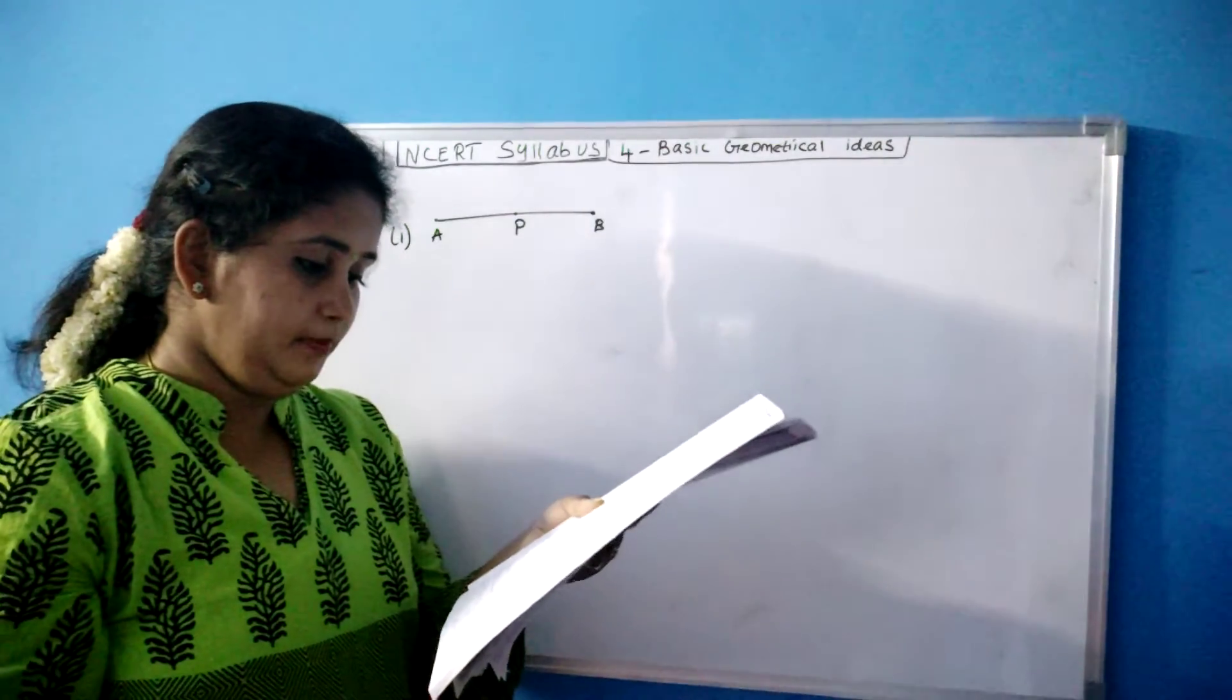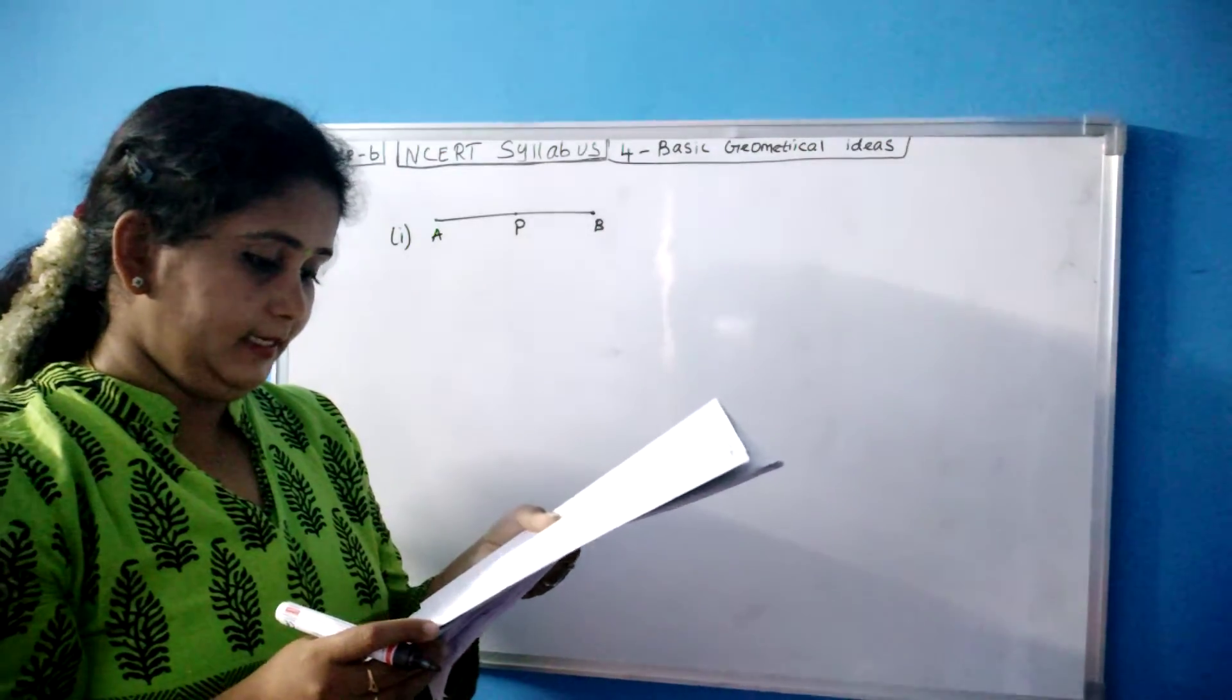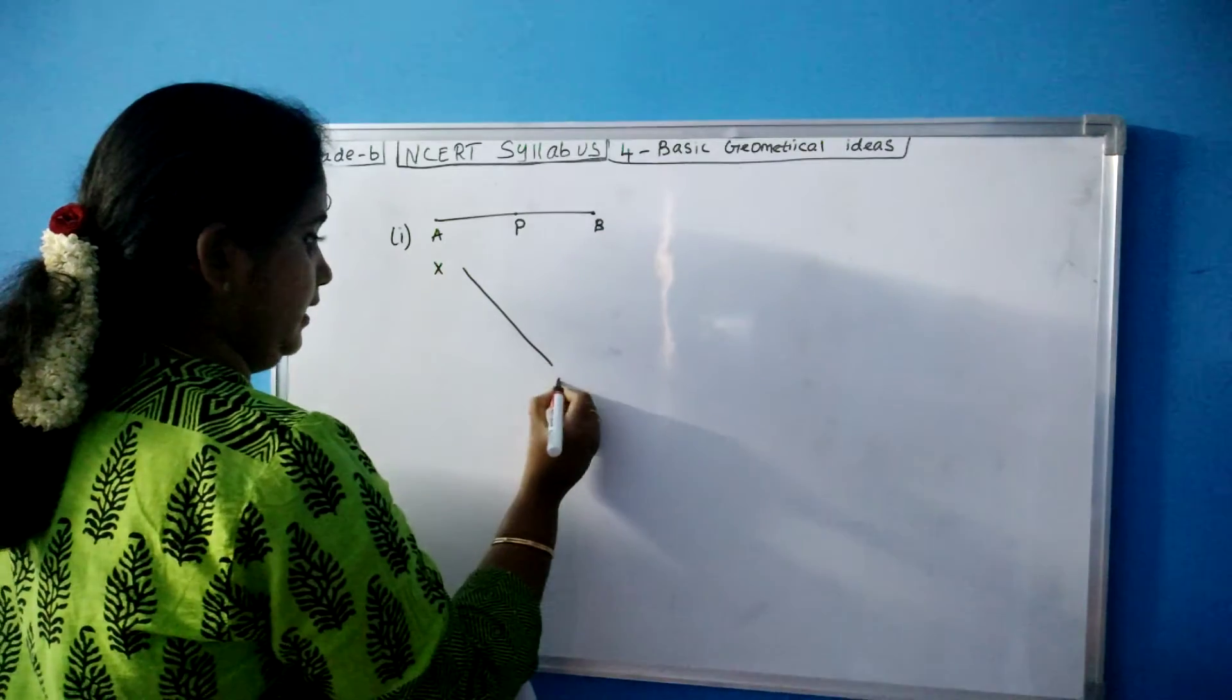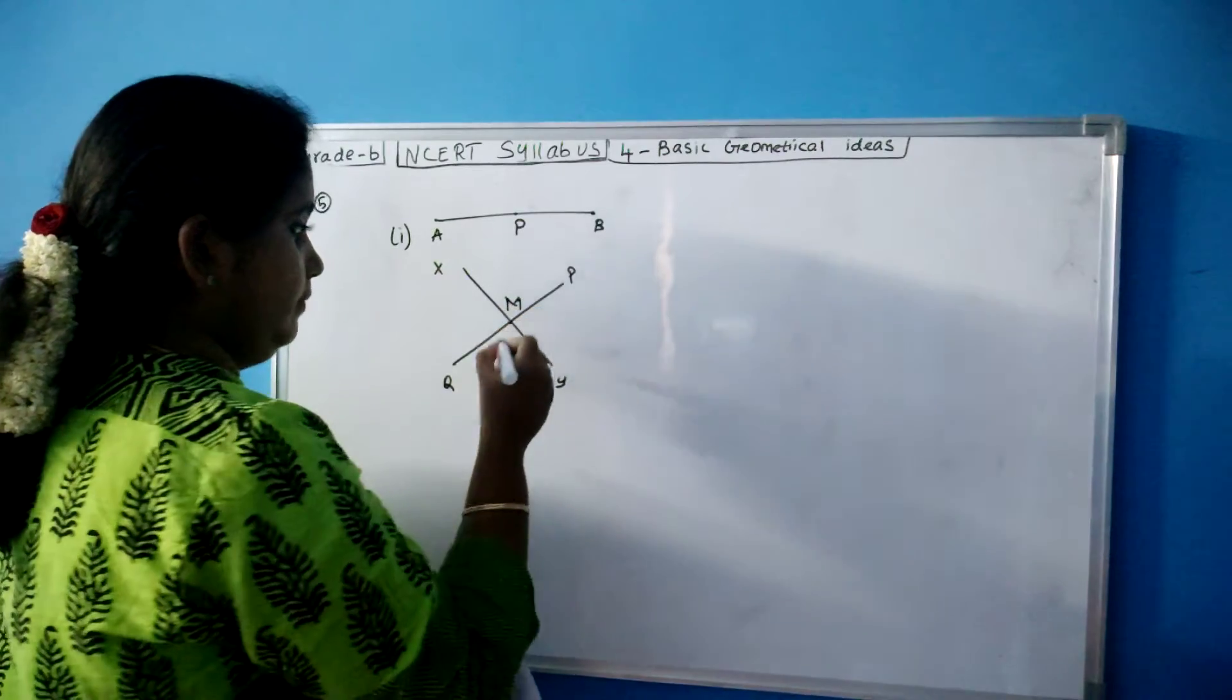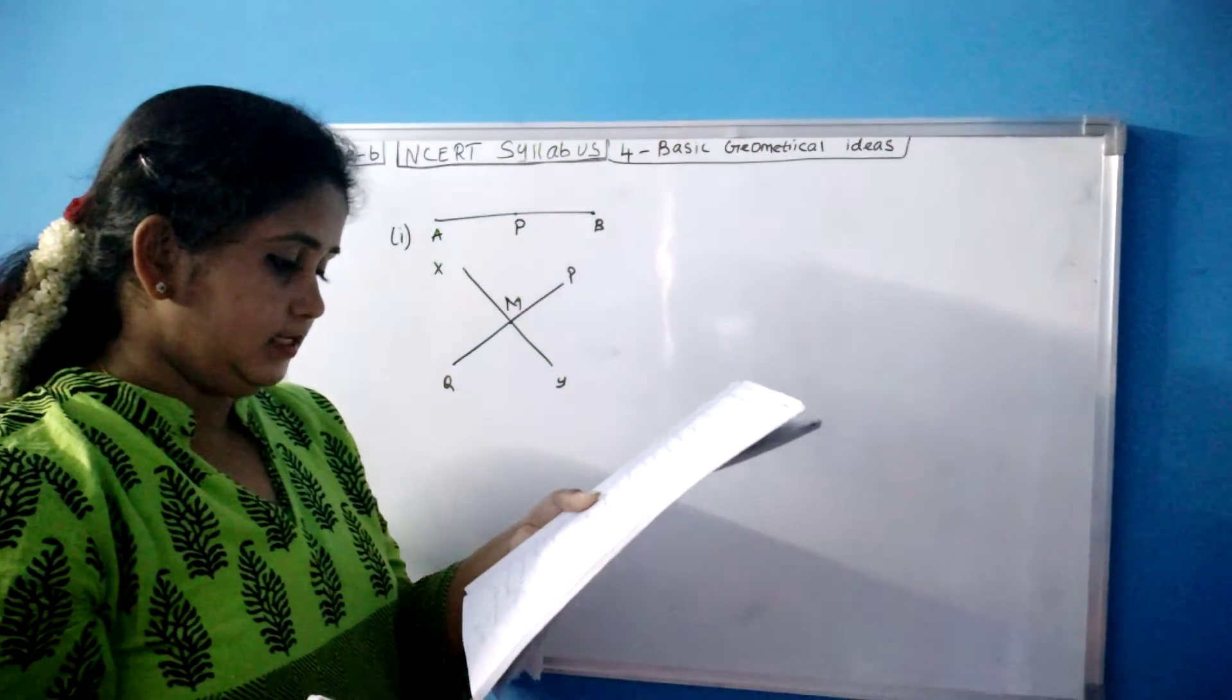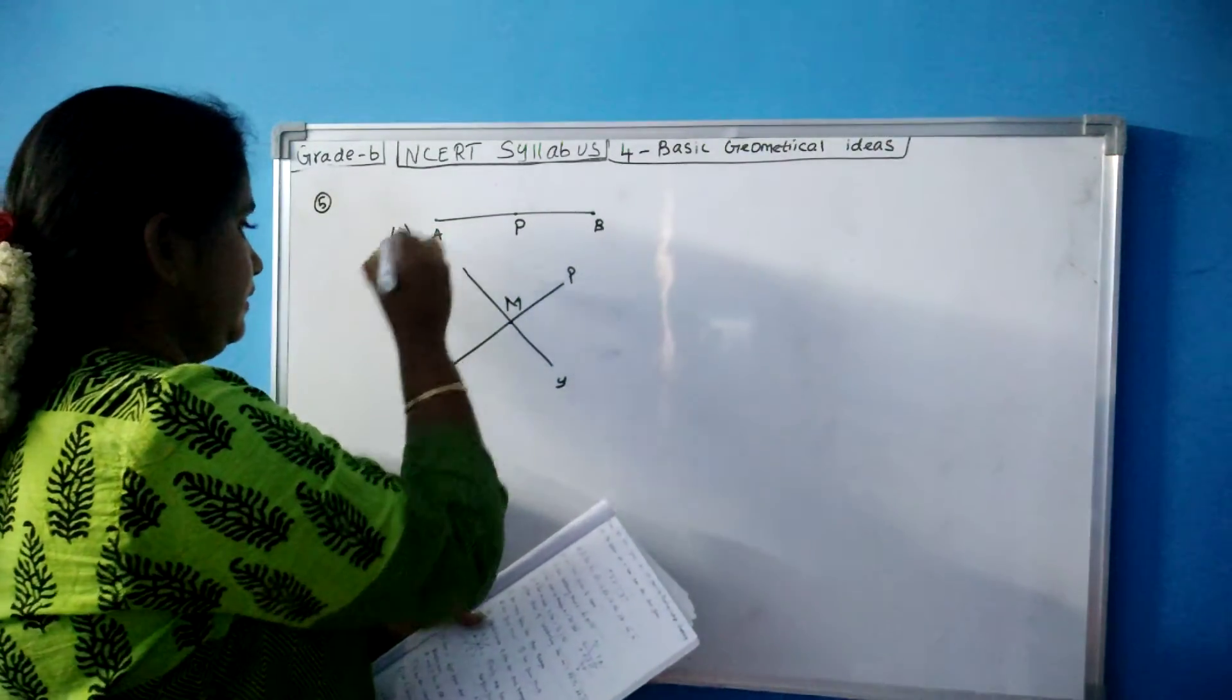Your second sum in your fifth question, that is B sum. Number one: XY and PQ intersect at M. So this is an XY line and this is a PQ line. It intersects at M. This is intersecting lines. Two lines cut each other, that is intersecting lines. Next one, this is your B sum and this is your A sum.